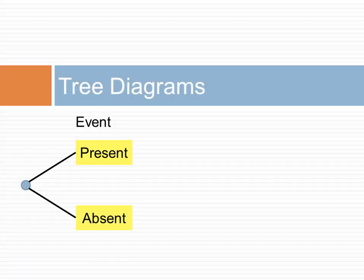The tree is drawn from left to right. A small circle indicates a probabilistic event. Two or more branches indicate the presence or absence of the event.